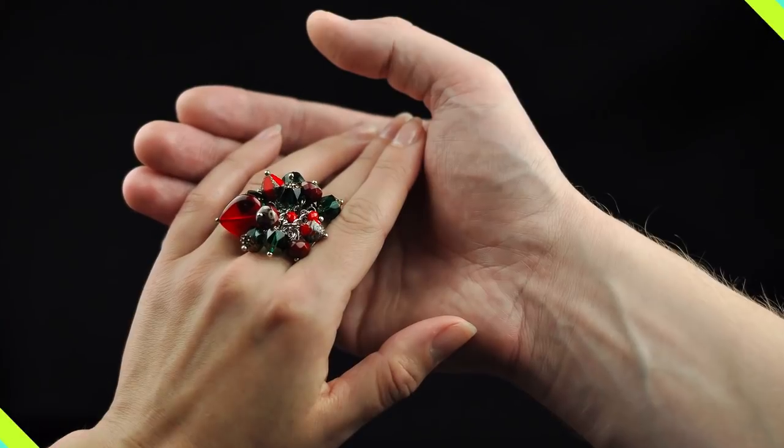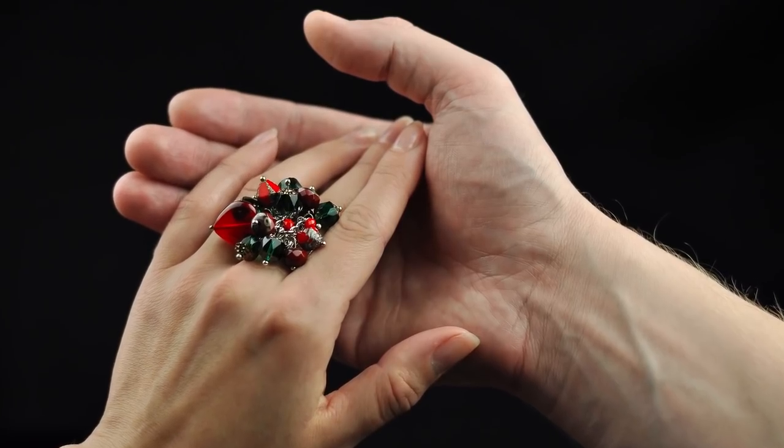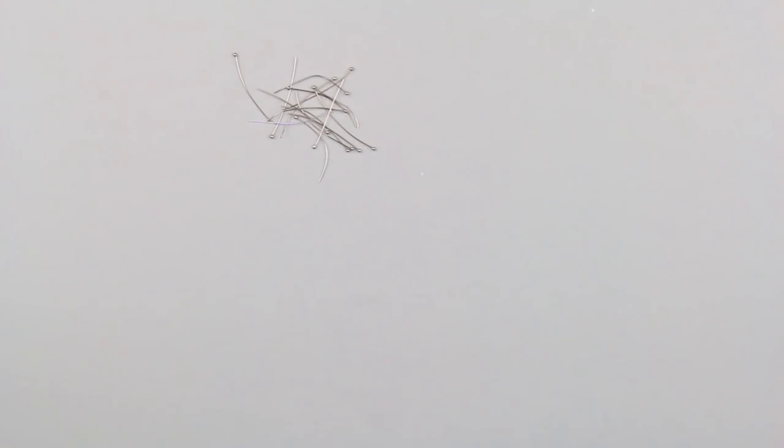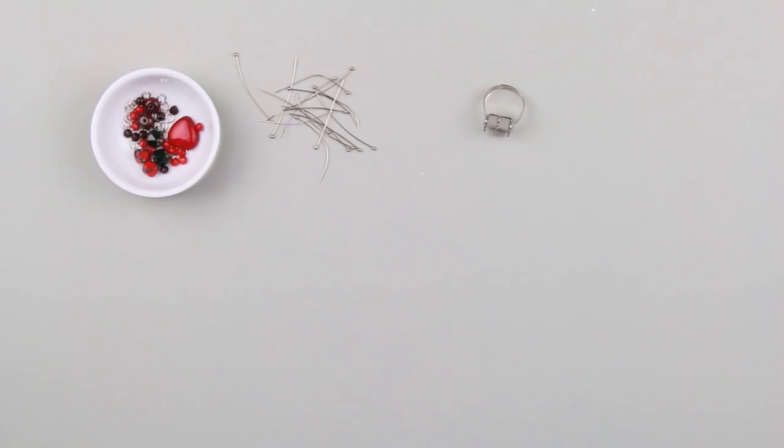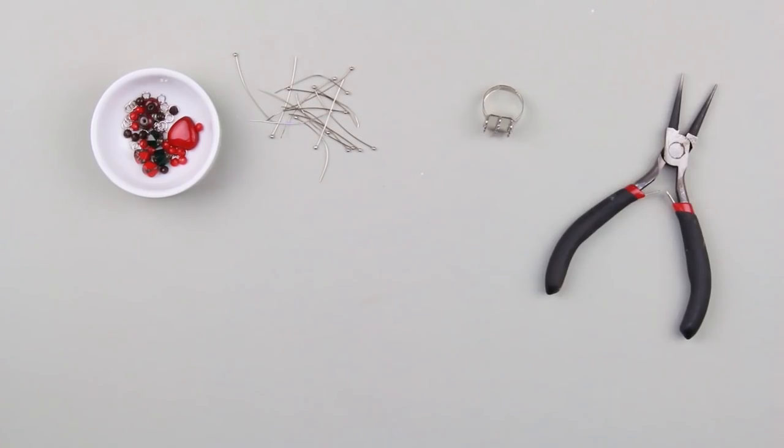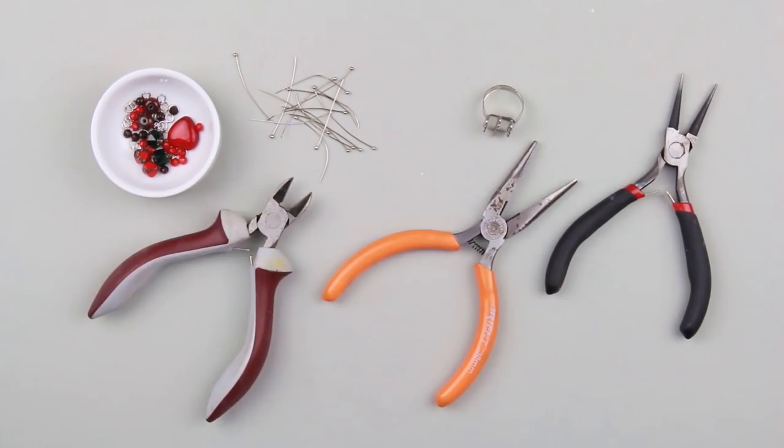In today's tutorial, we'll show you how to make an unusual ring from beads. We'll need decorative pins, a metal ring base, glass beads, round pliers, flat pliers, and cutting pliers.